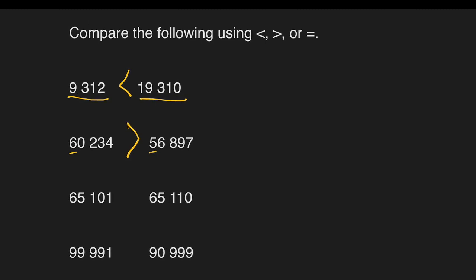For the next set, we'll compare starting from the left: 6, 6, 5, 5, 1, 1, 0, and 1. Which is bigger? It's 1. So we'll have less than. 65,101 is less than 65,110.